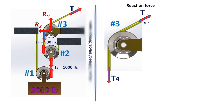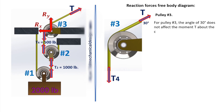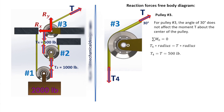Reaction Forces Free Body Diagram. Pulley number 3. The angle of 30 degrees does not affect the moment T about the center of the pulley. The sum of the moments equals T4 times radius equals T times radius. Therefore, T4 equals T equals 500 pounds.